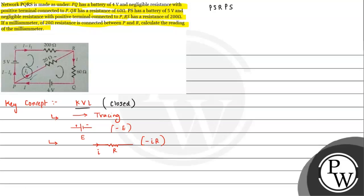We take loop PSRP and apply KVL. We are moving from P to S side, and we have a 5 volt battery. Since we are moving from positive to negative side, there will be a drop of 5 volt, so we write minus 5.